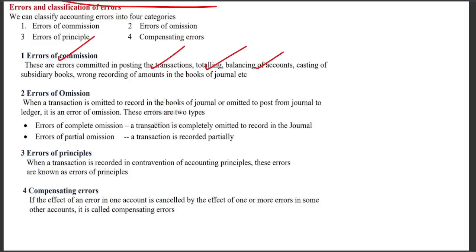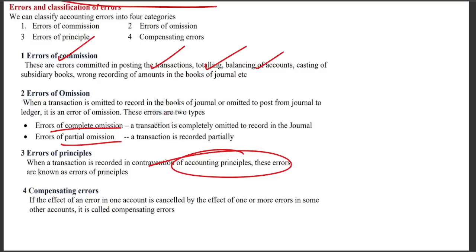Errors of omission occur when a transaction is completely omitted from the books. Errors of principle occur when an accounting principle is violated — for example, if repair charges on machinery are debited to the machinery account instead of the repairs expense account, that is an error of principle.